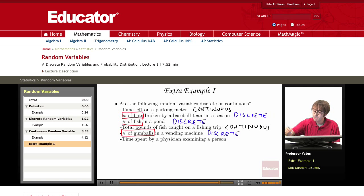And then finally, the time spent by a physician examining a person. No matter how short or how long that is, it's time, which is a continuous measure. So we have a continuous random variable.